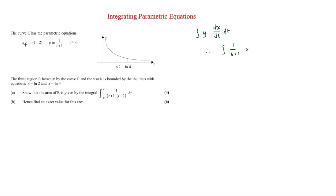Here y equals 1 over (t plus 1). Differentiating x equals ln(t plus 2) gives dx/dt equals 1 over (t plus 2). So the integrand becomes 1 over (t plus 1) times 1 over (t plus 2), which simplifies to 1 over (t plus 1)(t plus 2). We still need to convert the limits from x-values ln 2 and ln 4 into t-values.